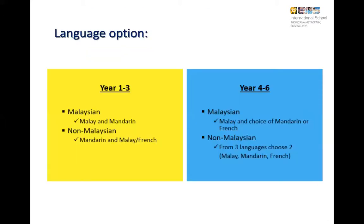Regarding language options for year four to six: if a child is not Malaysian, they can pick two out of three languages — Malay, Mandarin, and French. If a child holds a Malaysian passport, Malay is compulsory, taking one of the two language slots. Their second language can be either Mandarin or French. Non-Malaysians may pick any two from Malay, Mandarin, and French.